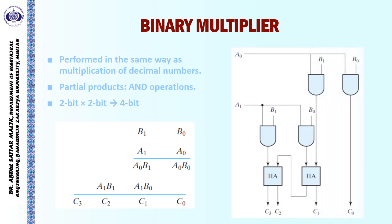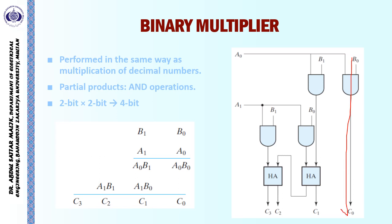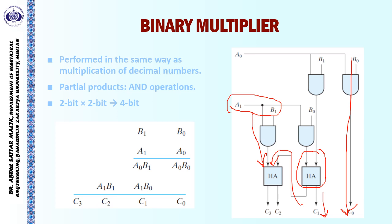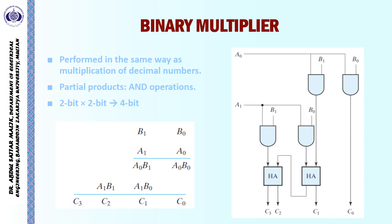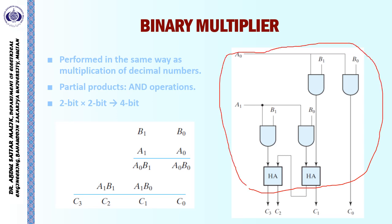As far as the circuitry is concerned, it is very simple. We form the partial product of A0 with B0 and B1, and similarly the partial product of A1 with B0 and B1. The A0B0 partial product comes directly as C0. The A0B1 and A1B0 partial products go to a half adder, with the sum bit output as C1 and the carry going to the next half adder. That carry along with A1B1 goes to another half adder, giving sum and carry as C2 and C3. Using this combinational circuitry, we can perform the multiplication of two 2-bit numbers and obtain a four-bit product.